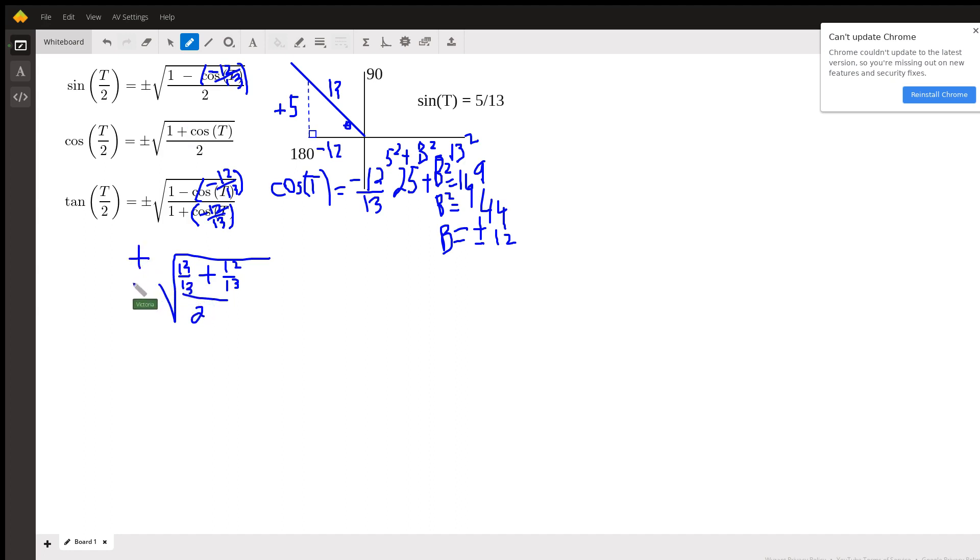And then this is over 2. So we need to represent this 1 here as 13 over 13, because we can. And now what we have is, on top, this is 13 plus 12 is 25 over 13. And that's all divided by 2, basically over 1. Remember, when you divide fractions, you keep the top 1, you switch to multiply, keep, switch, flip. And when you multiply fractions, it is the top with the top, 25 times 1, and the bottom with the bottom over 26, 13 times 2.